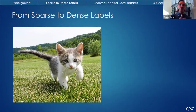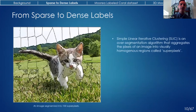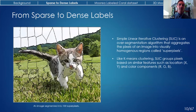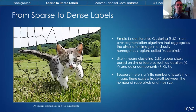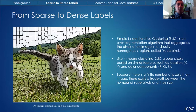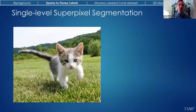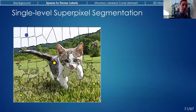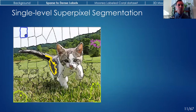Before getting to how you convert sparse into dense labels, I want to introduce an over-segmentation algorithm called Simple Linear Iterative Clustering, or SLIC. This and other over-segmentation algorithms aggregate the individual pixels of an image into visually homogeneous regions called superpixels. They work by treating each pixel as a data point and clustering them together based on shared similarities of color value and location. So pixels that are clustered together in feature space form superpixels within image space. There's a trade-off between the number of superpixels that form and their relative size — if we increase the number of superpixels, each one gets smaller.